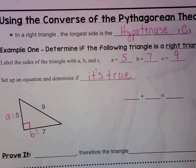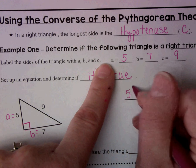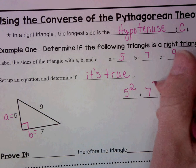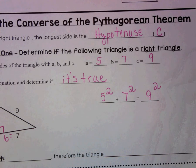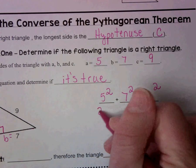So now it says set up an equation and determine if it's true. So we're looking to see if our equation makes a true statement. So we said that A was 5. So 5 squared plus 7 squared is equal to 9 squared. So all I did was fill it in.